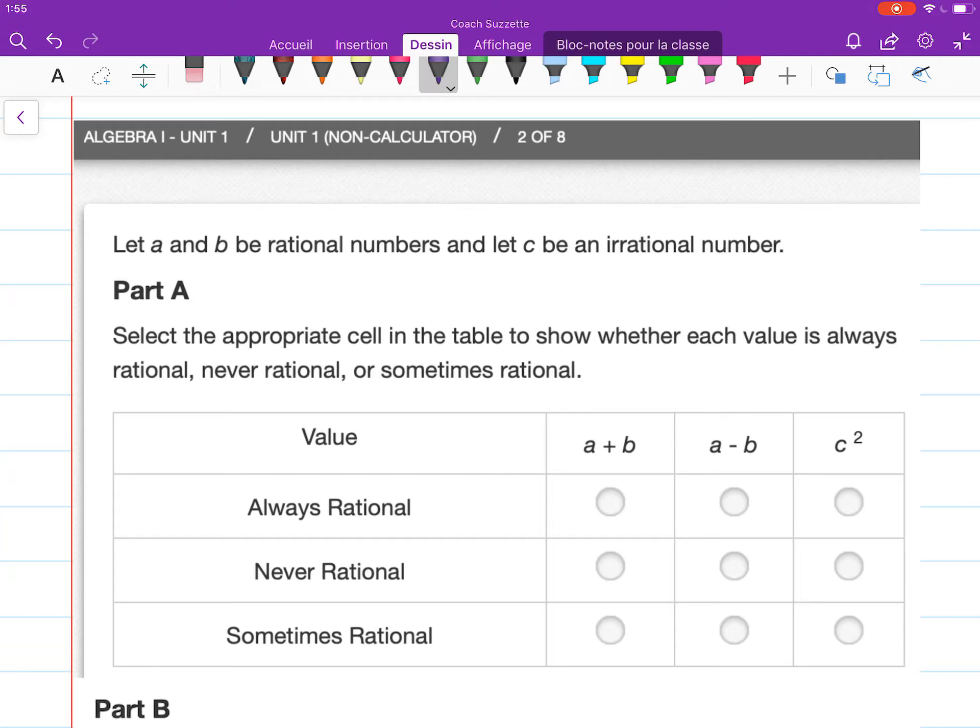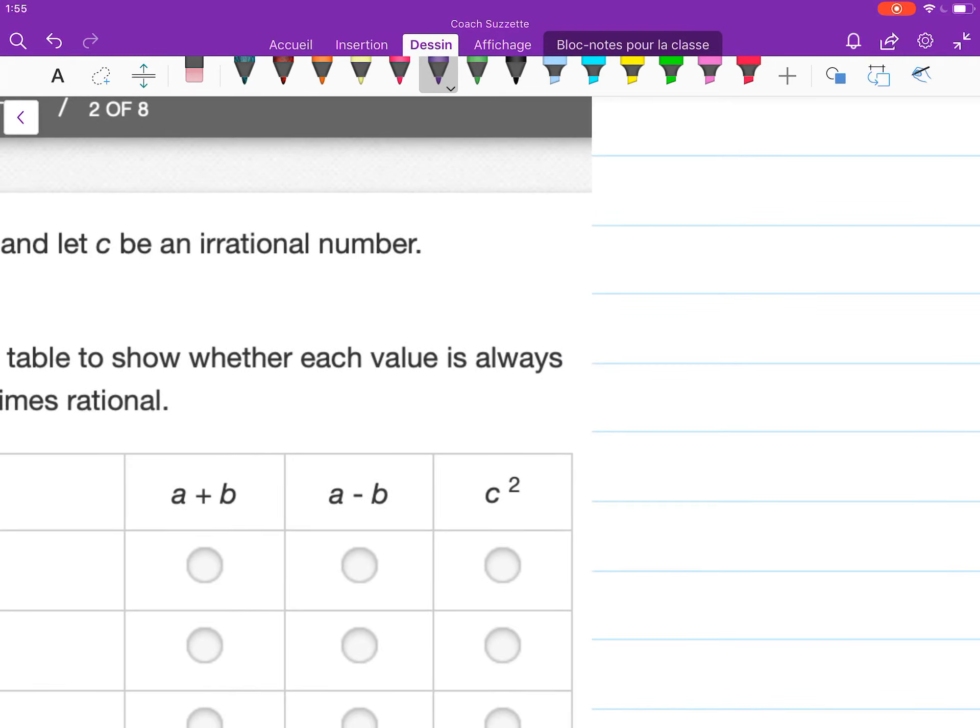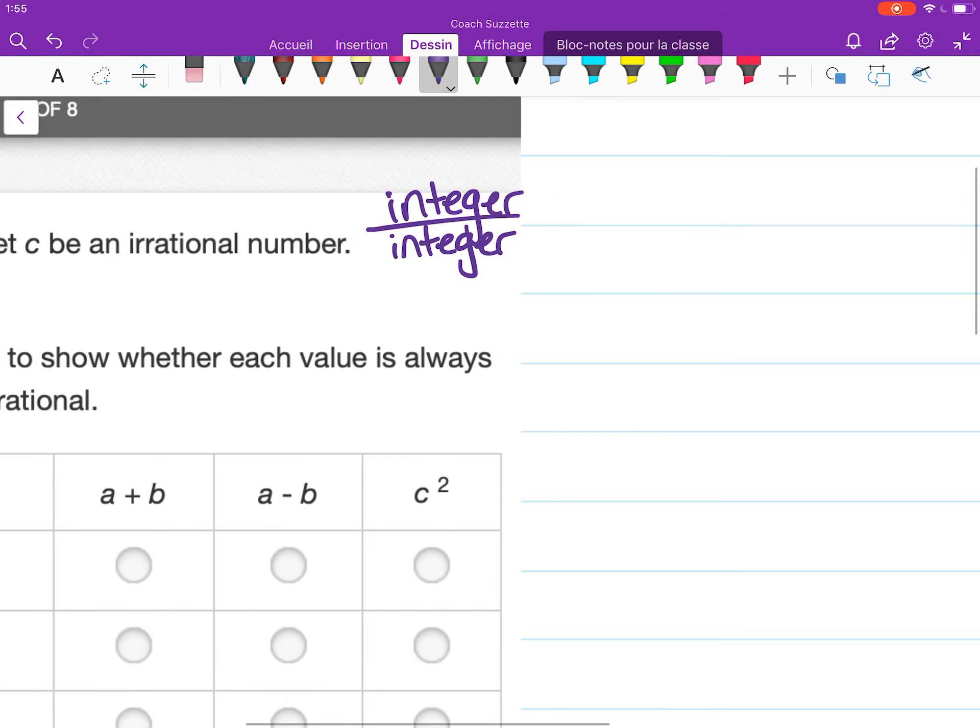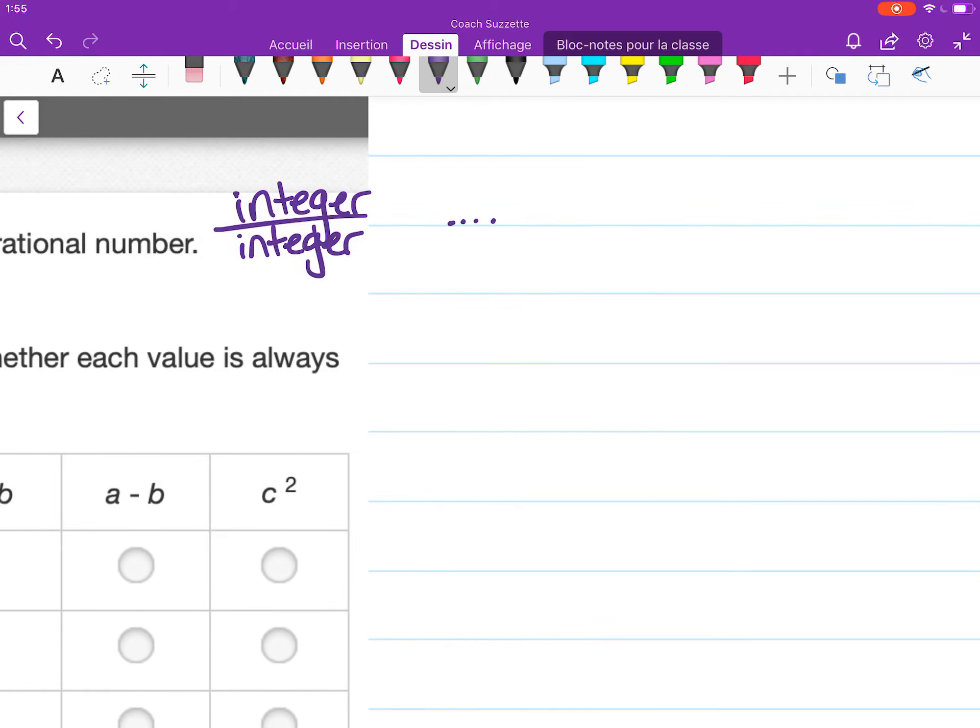Recall that rational numbers are numbers that can be written as fractions where both the numerator and denominator are integers. So it would be some integer divided by some integer, and a set of integers. Here are some examples.